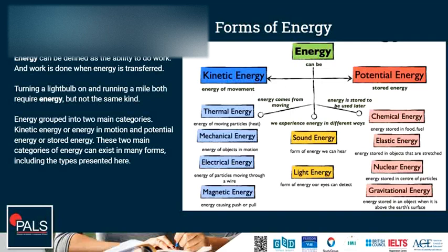Energy is grouped into two main categories: kinetic energy or the energy of motion and potential energy or stored energy. These two main categories of energy can exist in many different forms, including the types that are listed on the right here.